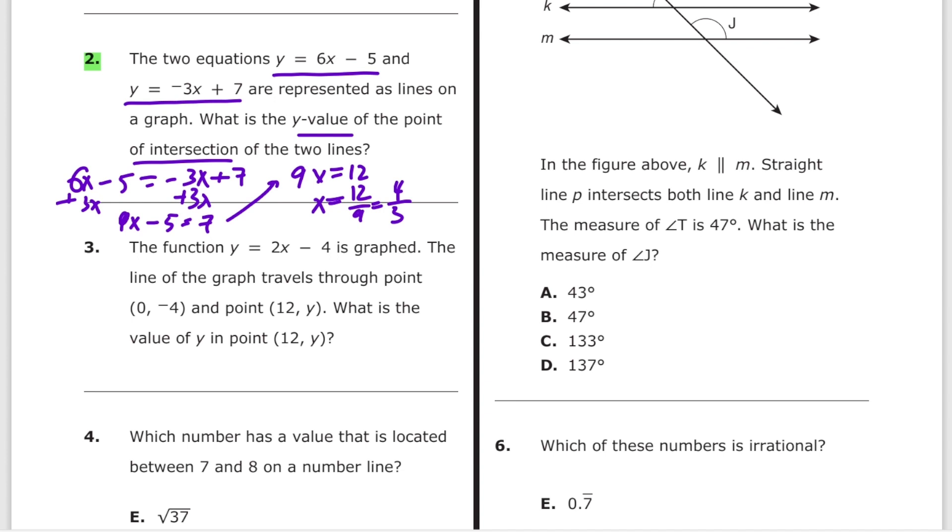Most of you will stop here. That's wrong because you need to find the y-value. In order to find that, plug 4 thirds into the first or the second equation. So let me just do it in the first one. y equals 6 times 4 thirds minus 5. Cancel this. This is 2. This is 1. So that's equal to 8 minus 5 or 3. That is my answer.